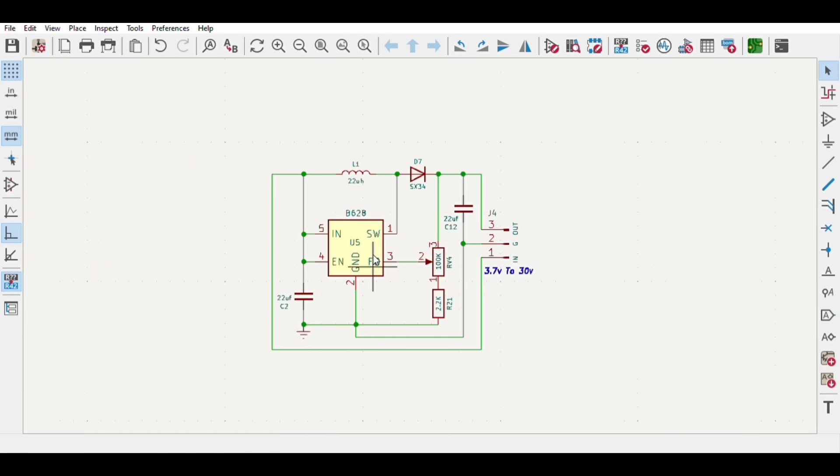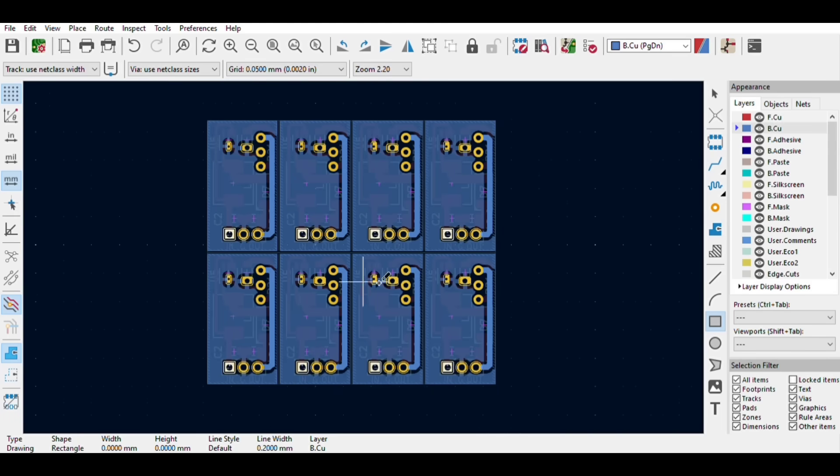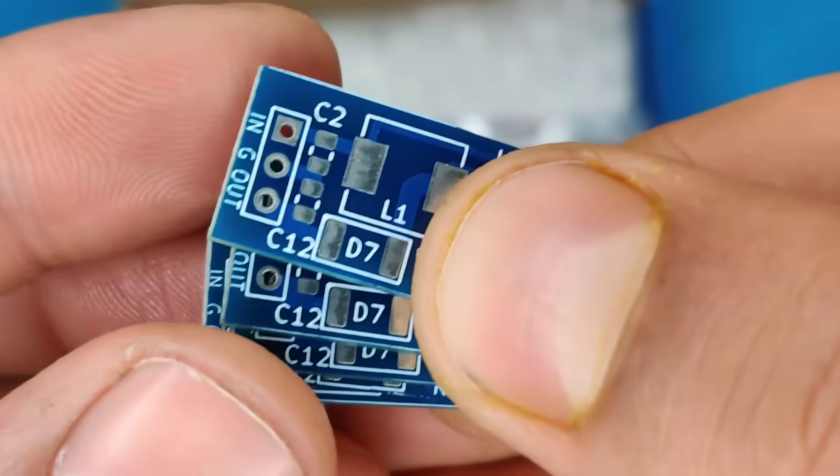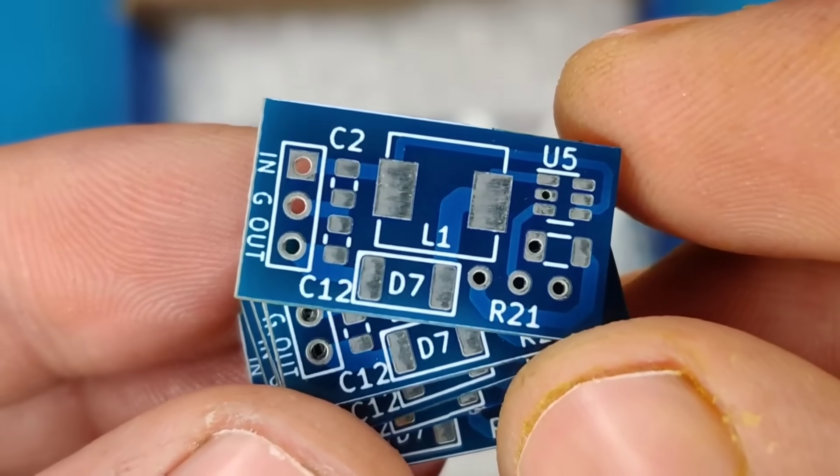To avoid messing up on perf board, I converted schematics into the PCBs and ordered the PCBs from JLCPCB. You will get high quality 5 pieces of PCBs for just 2 dollars.